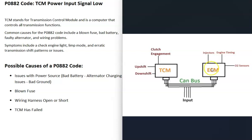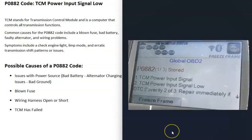When you get this P0882 code, the main computer is seeing that the power going to the transmission control module is low, and you'll need to troubleshoot to find out why.